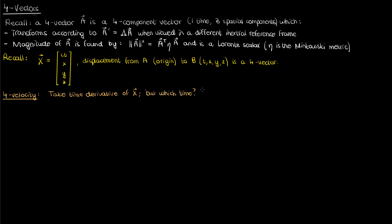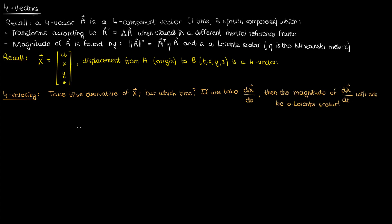Time is relative. According to time dilation, the time between two events measured by observers in different inertial reference frames is different — it's not the same as in classical physics. If we take the regular time derivative of capital X, we end up with a quantity whose magnitude will change depending on the inertial reference frame you're in.